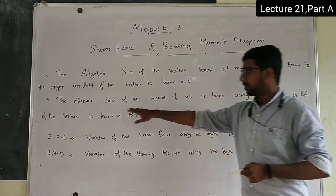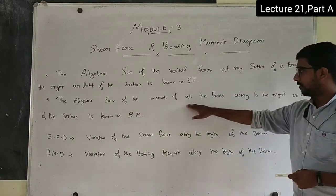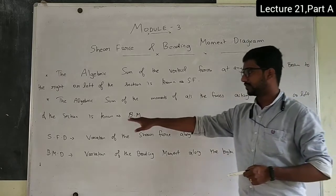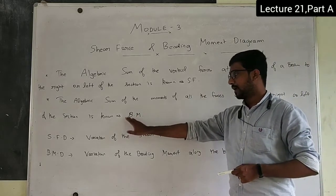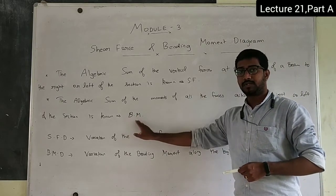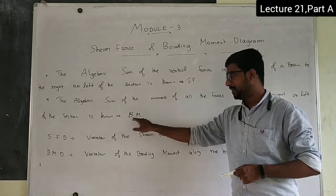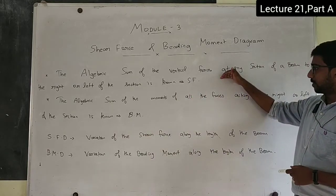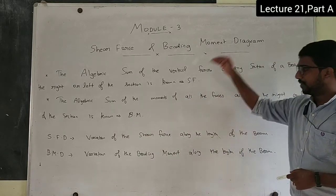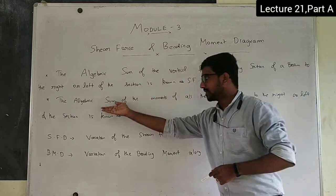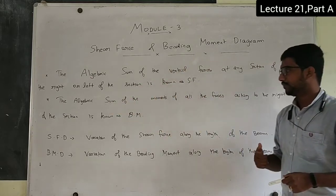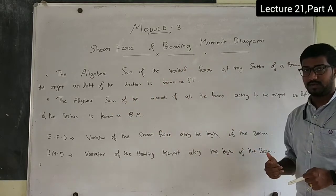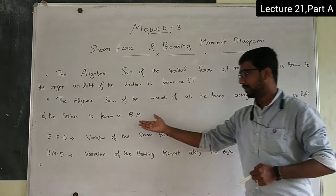The algebraic sum of moments of all the forces acting to the right or left of the section is called bending moment. We write it as B.M. The algebraic sum of moments of either left or right of the section is called bending moment.